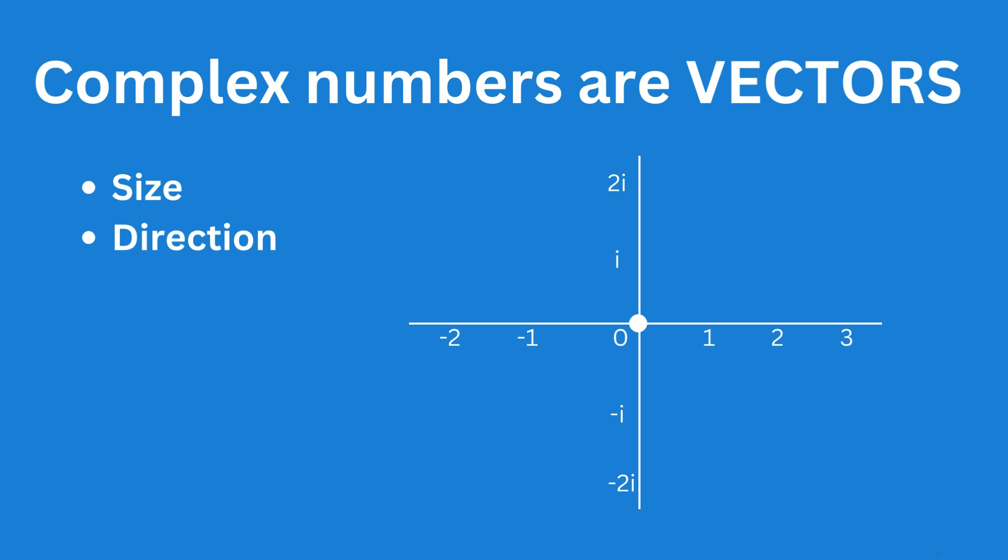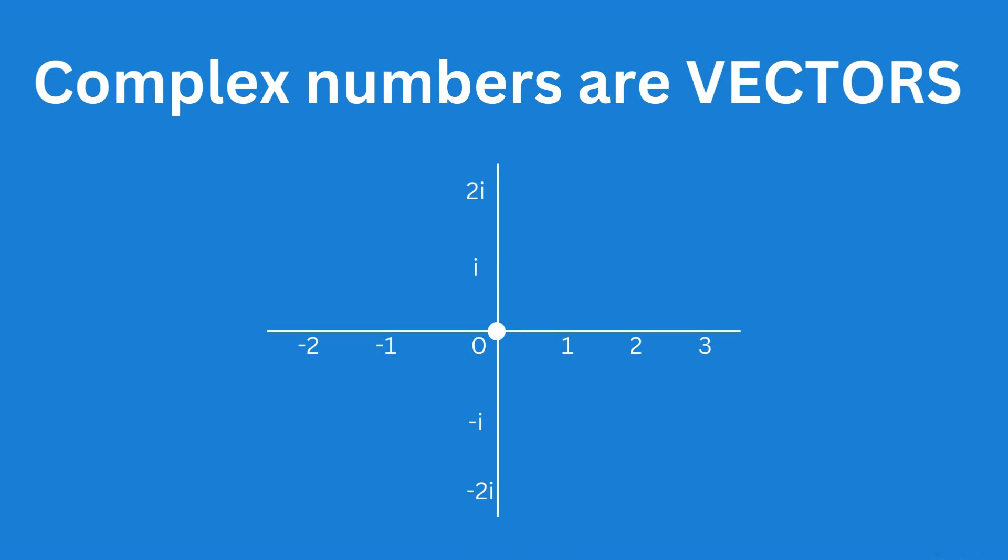A vector has both a direction and a size. You're probably familiar with negative numbers. If we start at the origin, zero, 2 is in the opposite direction to minus 2, but they both have the same size of 2.